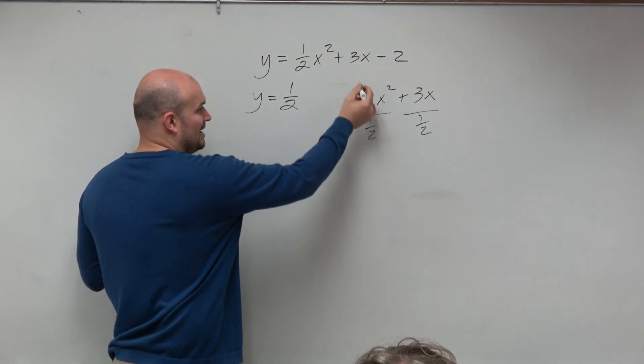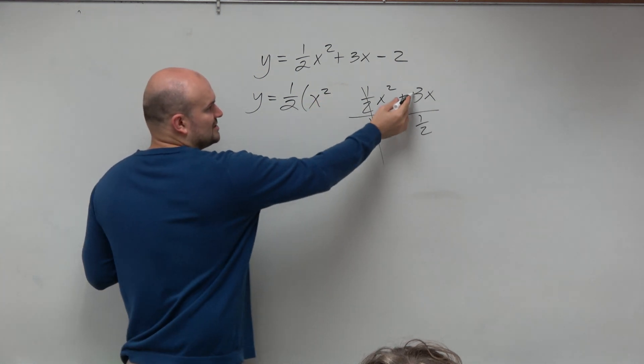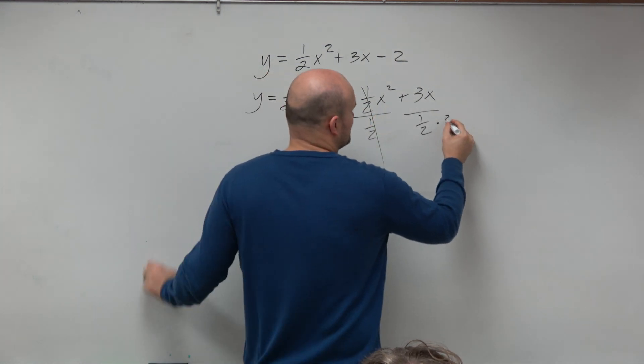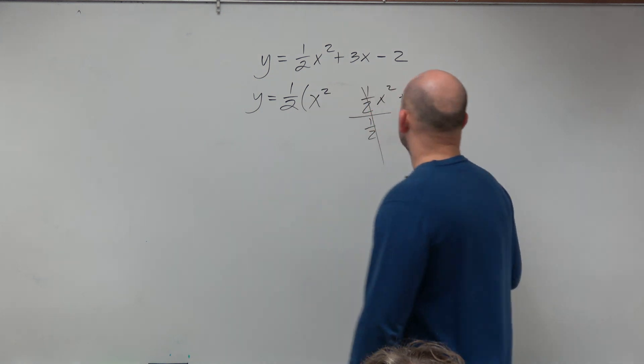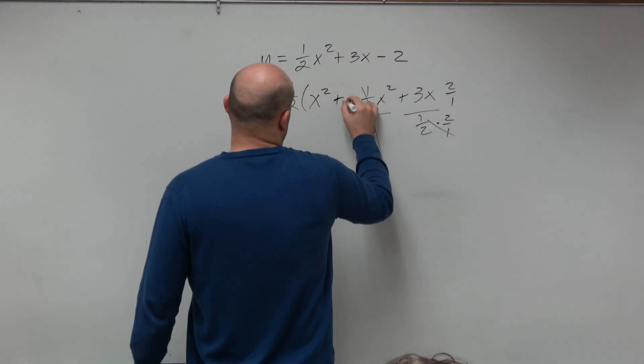But it's really the same thing. What's 1 half divided by 1 half? Good, 1. So we're just left with an x squared, right? Then what is 3 divided by 1 half? I don't know. Let's multiply by the reciprocal. 3 times 2 equals 6x, OK? So it's not like crazy.